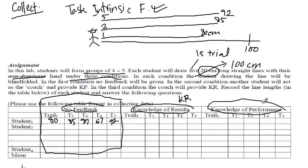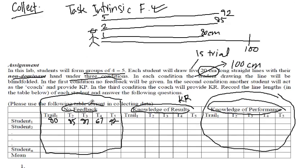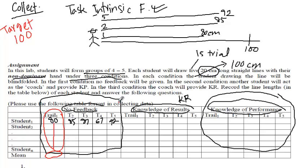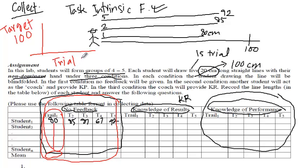After they're done completing this segment, only then can they move on to knowledge of results, and after that only then can they move to knowledge of performance. When you're done collecting all this data with 100 as your target position, you compute the mean of each column — add all the numbers and divide by the number of students. You do this for the no feedback case first, and you're left with a graph where the x-axis is the trial number and the y-axis is the average score.